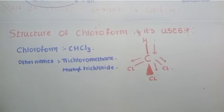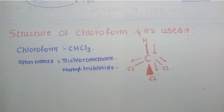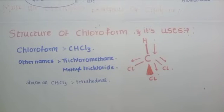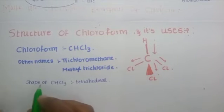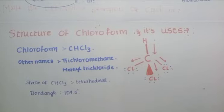The topic is also relevant for dipole moment questions. We should know the shape of chloroform, which is tetrahedral. The bond angle between carbon and chlorine is 109.5 degrees.